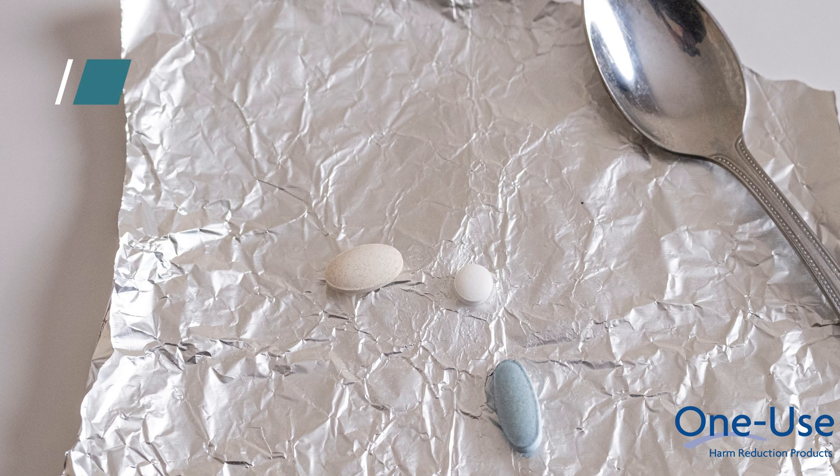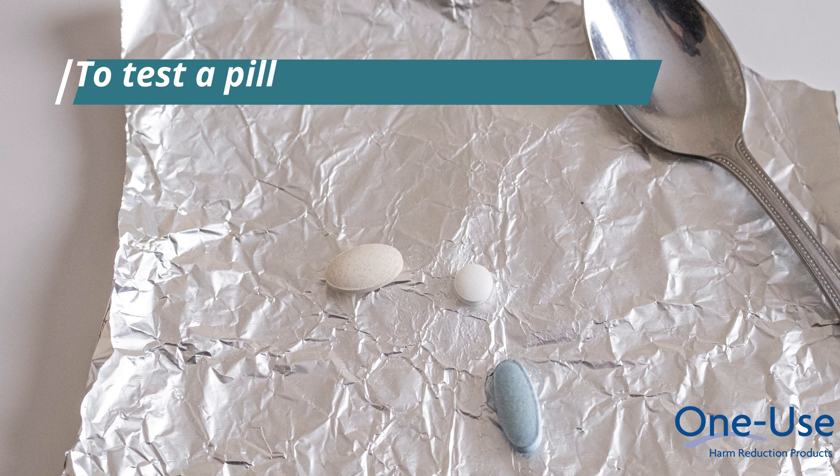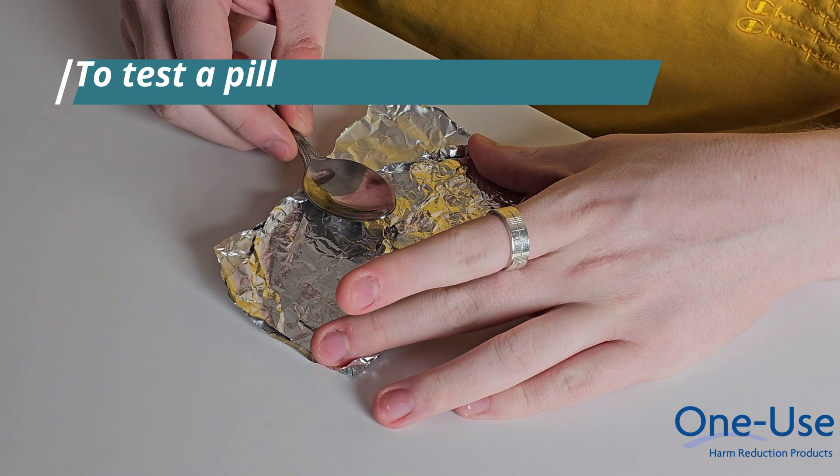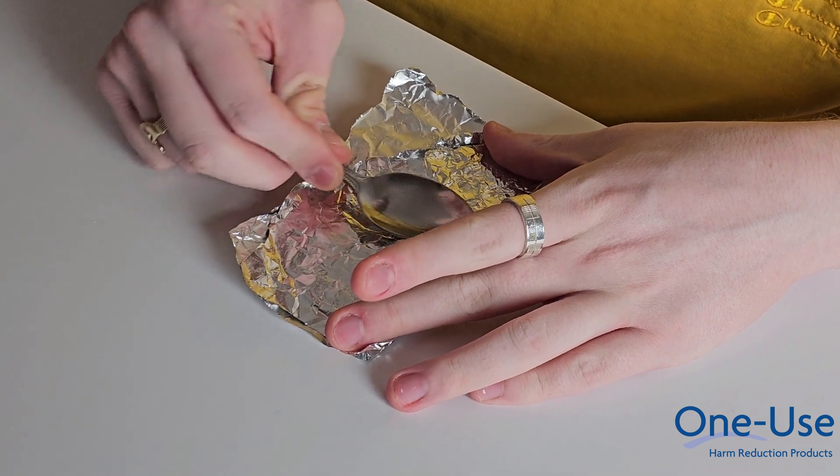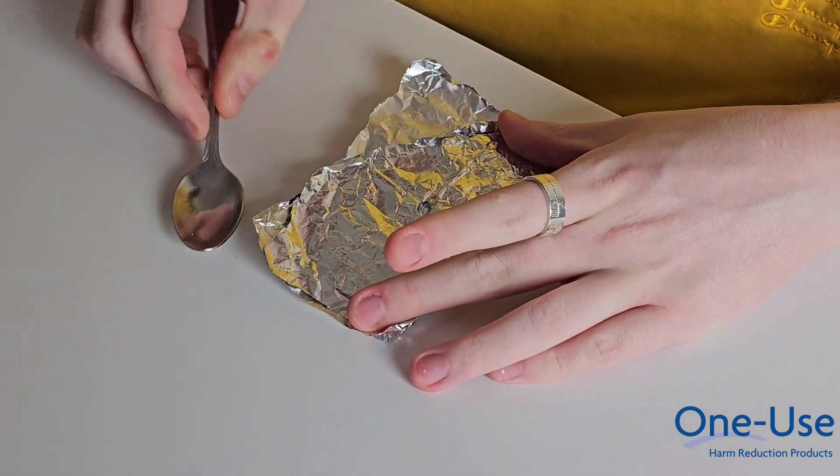A drug in a pill form will first need to be crushed into a fine powder. To prepare a pill for testing, place the entire pill in some foil, fold the foil, and using the back of a hard object, crush the pill into a fine powder.